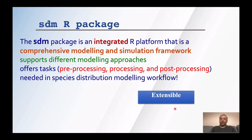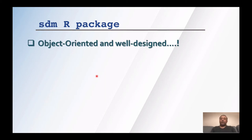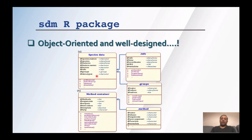One of the important capabilities of SDM is its extensibility — it can be extended by users. It also supports reproducibility. It is an object-oriented platform: all data, methods, and each component in the package are designed as a special class. For example, we have a species data class with different parts containing all the details about the species. This class may be linked to other classes, and it keeps metadata for species. We have the same design for methods.